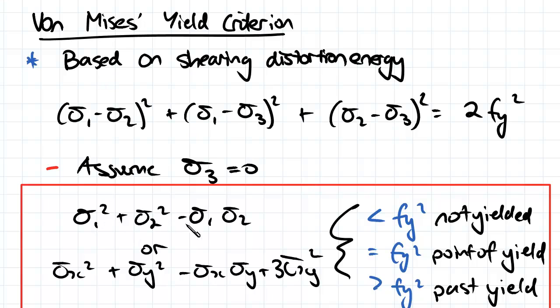So sigma 1 squared plus sigma 2 squared minus sigma 1 times sigma 2. If that's less than Fy squared, it's not yielded and so on and so on.